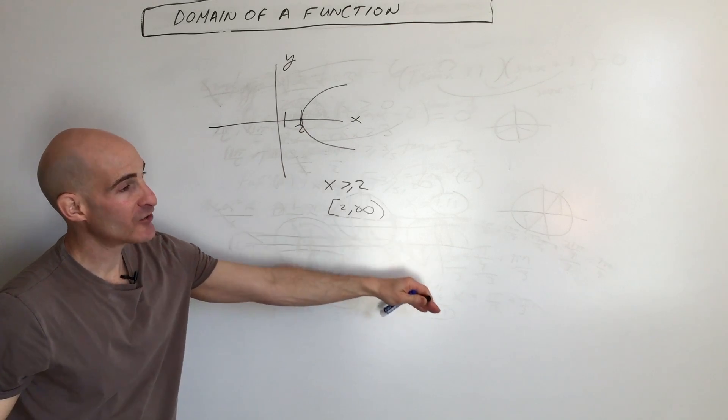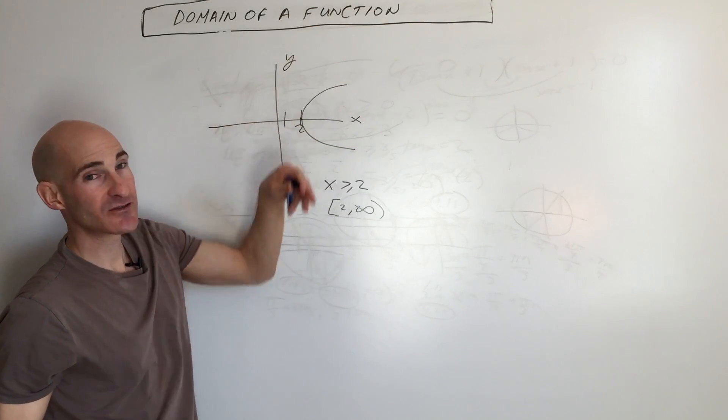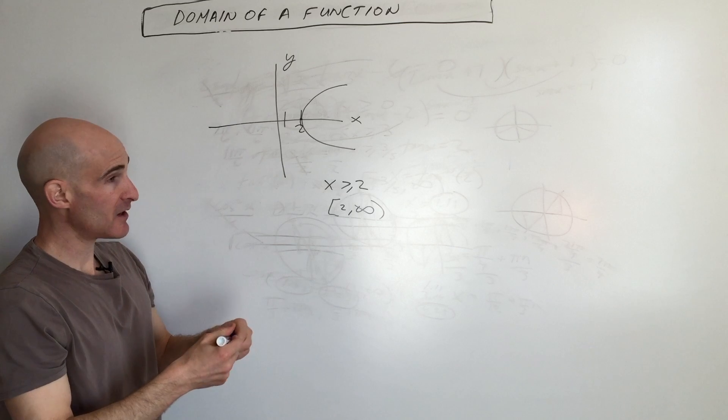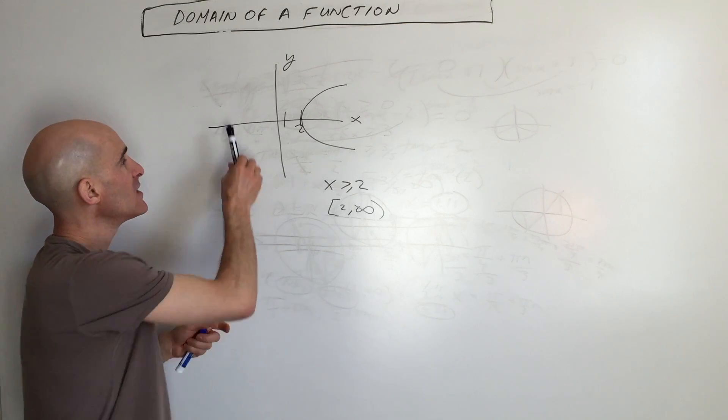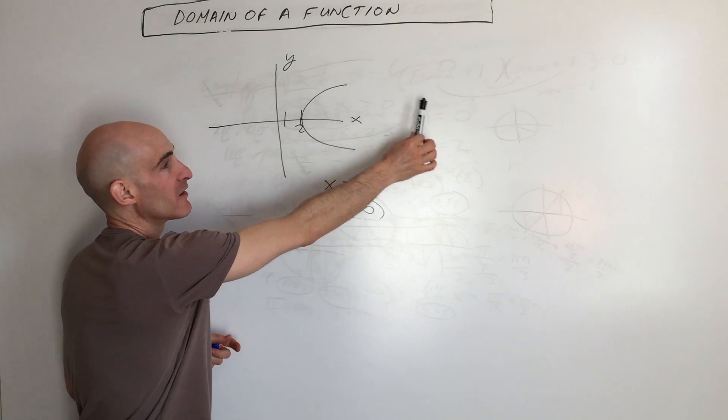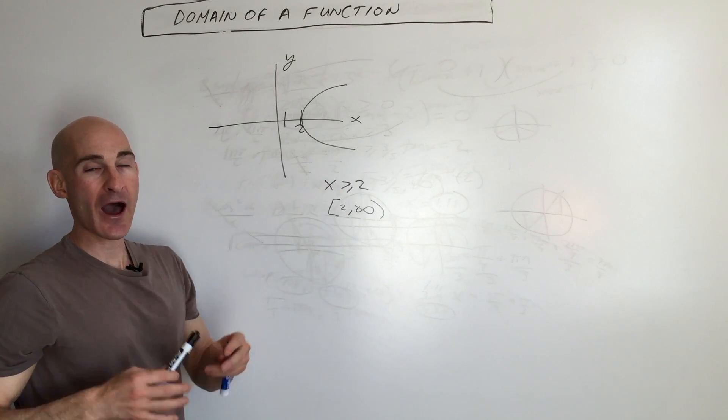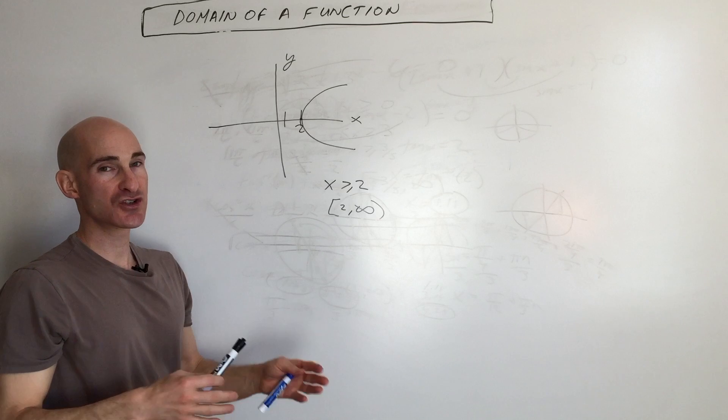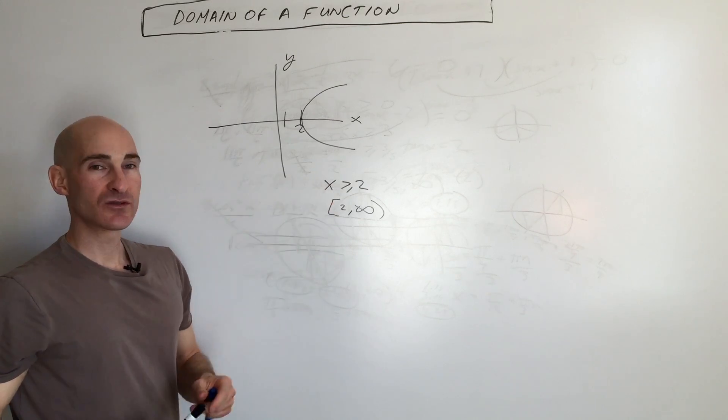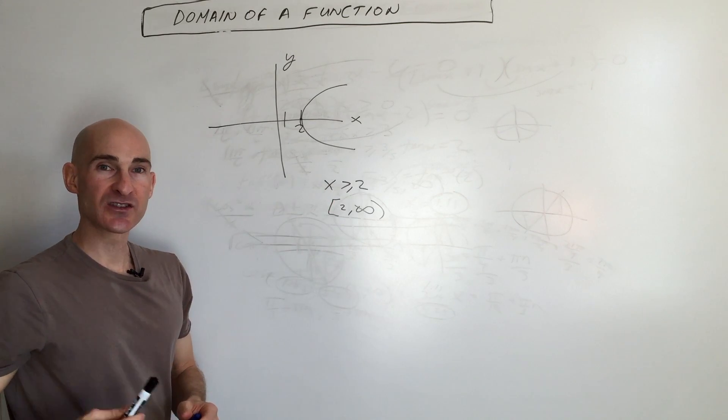Now the range, this is going down towards negative infinity, up towards positive infinity. The range would be all real numbers, but in this lesson we were just talking about the domain. So we're thinking about going from left to right like that. So this has just been a little overview about how to find the domain, whether you're given an equation or you're given a graph. So review it again if you need to, and I'll see you in the next video.